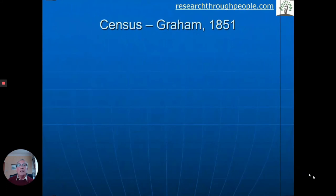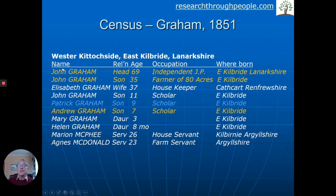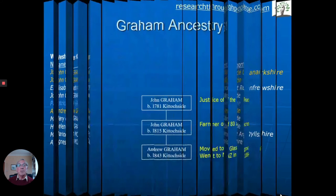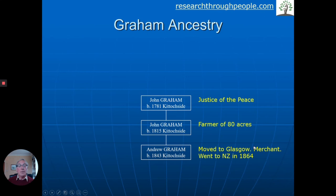With research, we looked at the census and found the Graham family. John Graham is the head, aged 69; his son John has become a justice of the peace. I've highlighted three generations in yellow: grandfather, father, and Andrew the son — all born in the East Kilbride area. I've also highlighted Patrick, because after doing this work I found someone else who also descended from the Grahams. Taking the two Johns and Andrew: Andrew became a merchant and went out to New Zealand in the 1860s.